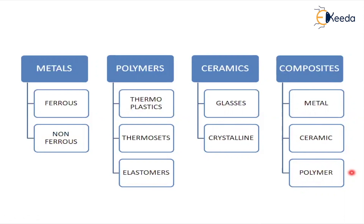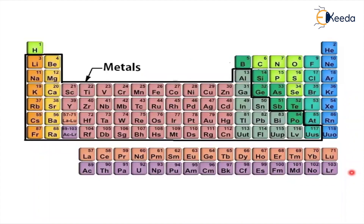Before going to the details, it is necessary to understand the periodic table. The periodic table is a tabulation of the chemical elements according to their atomic number and electronic configuration. Just observe the periodic table — all metals are listed on the left side and non-metals are listed on the right side of the table.